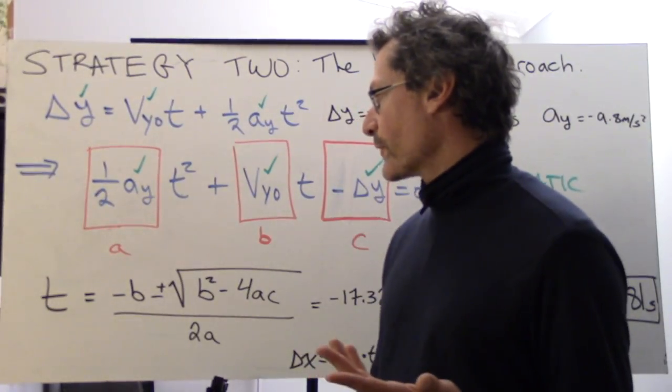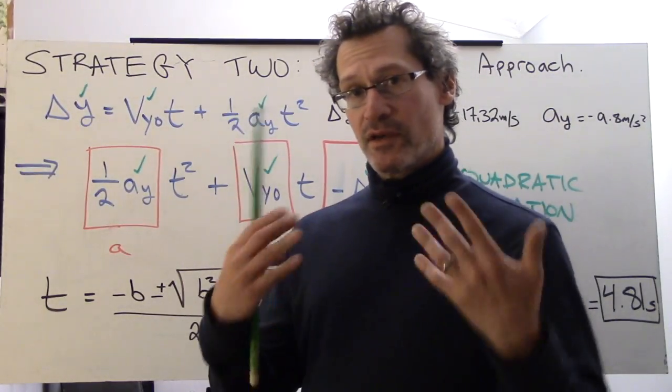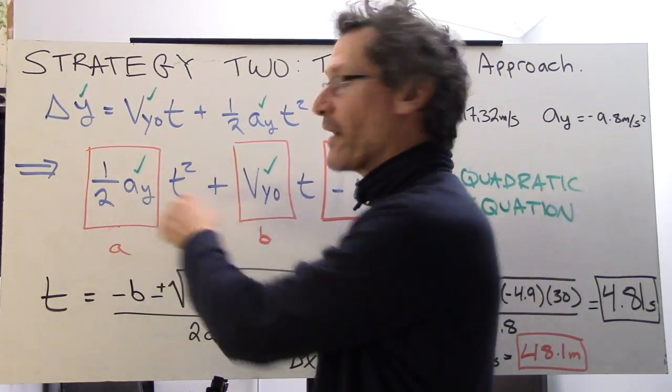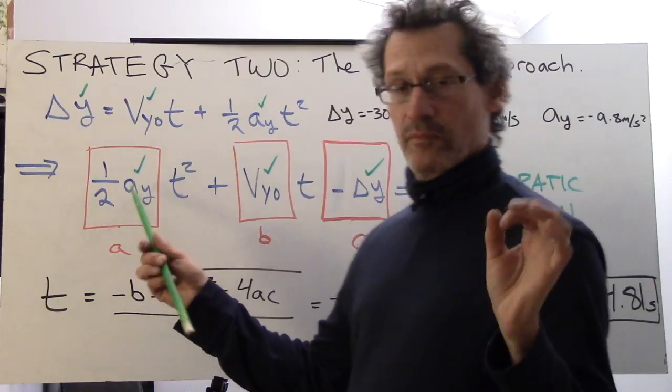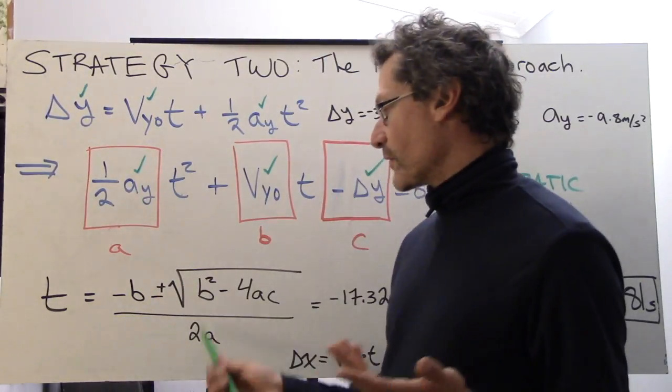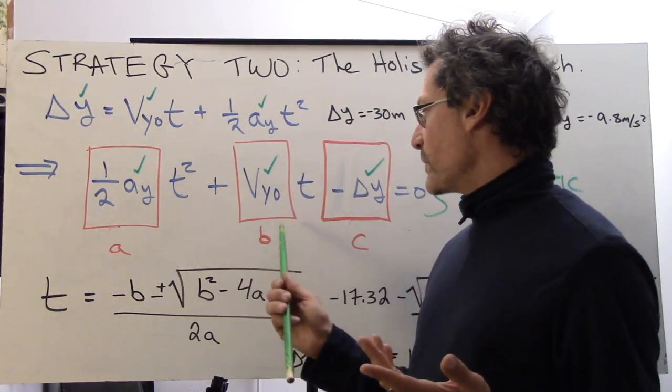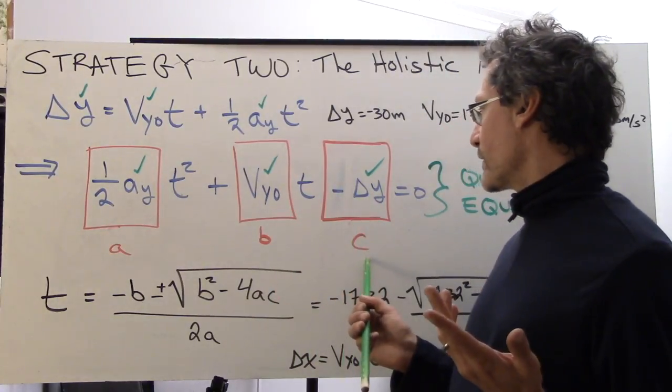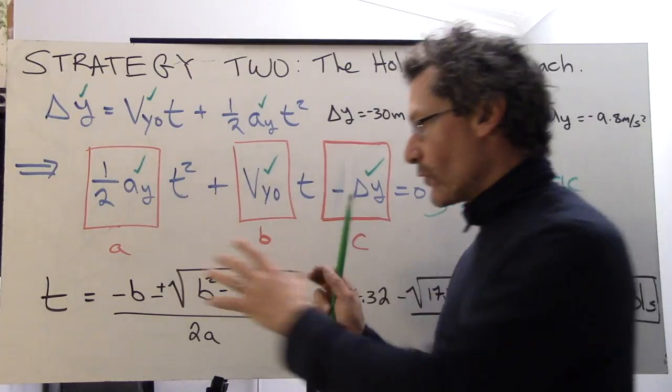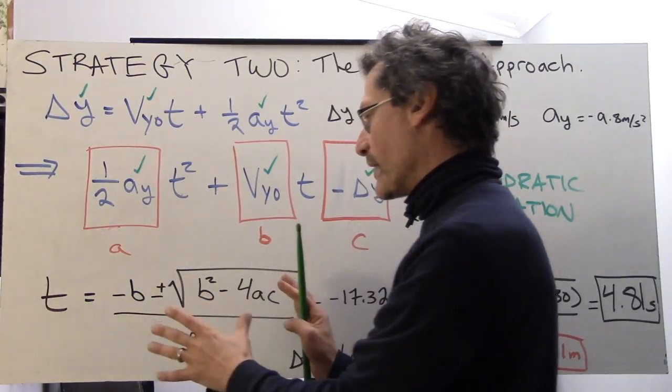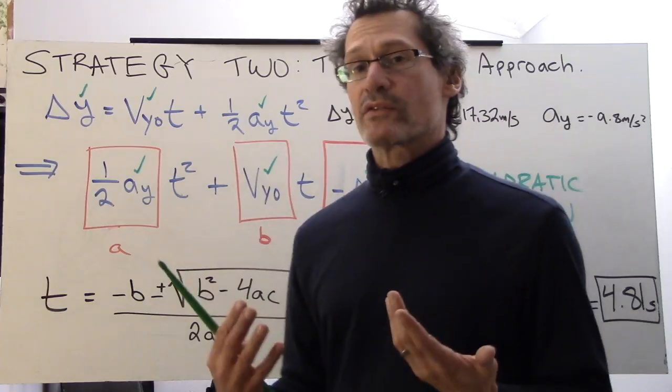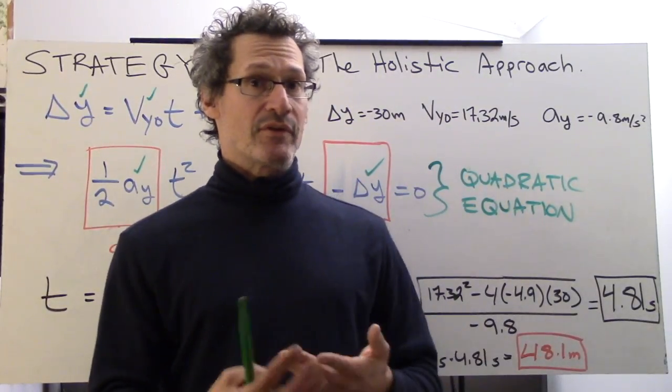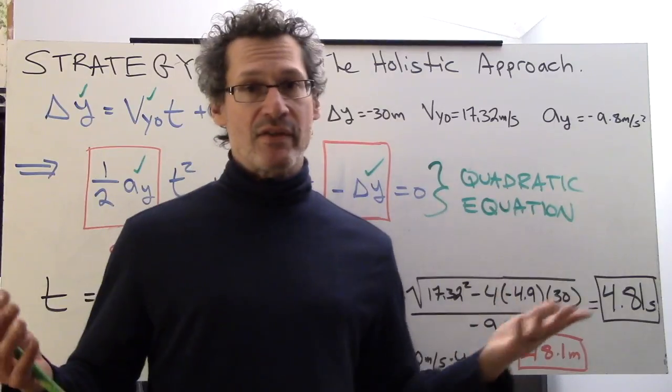The coefficients in front of each of the variables: this one is a in front of t squared, this whole thing here, one half a y. This a is standing for acceleration, and this a for the constant. V y naught is constant b, and negative delta y is constant c. So we organize stuff like this. The thing is about this is that we actually get two answers.